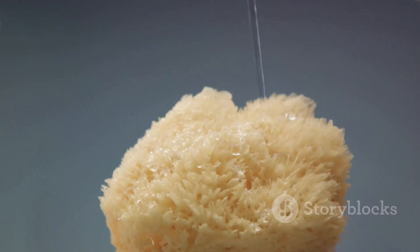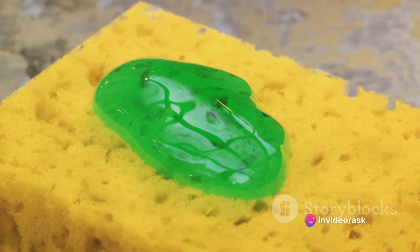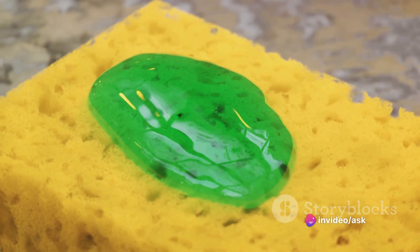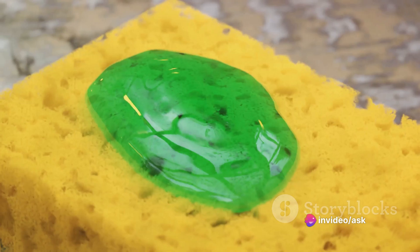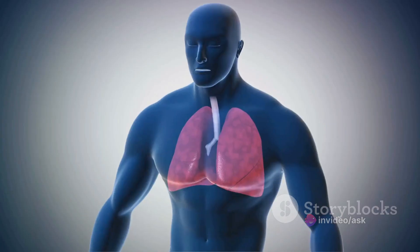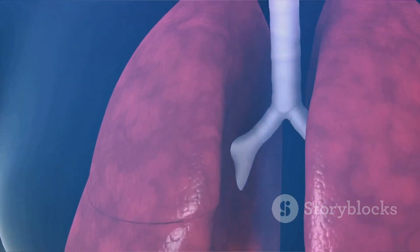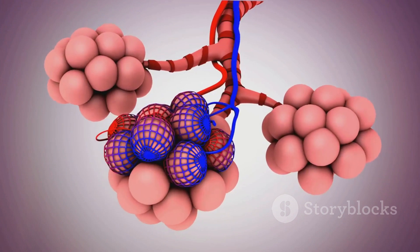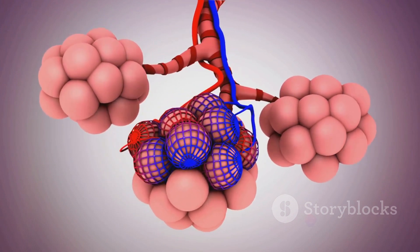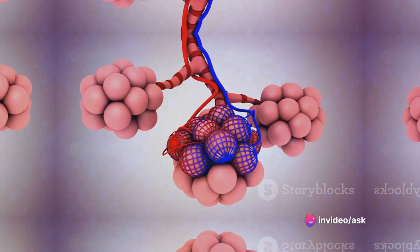Imagine a sponge soaked in water. If you squeeze it, water diffuses out quickly because of the vast surface area it provides for diffusion to occur. Similarly, in the human body, the alveoli in our lungs have an immense surface area which allows for efficient gas exchange.